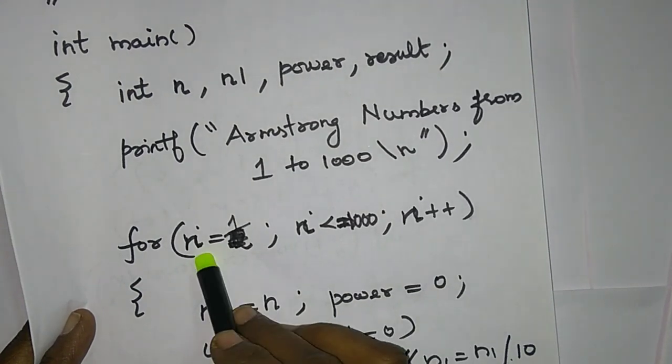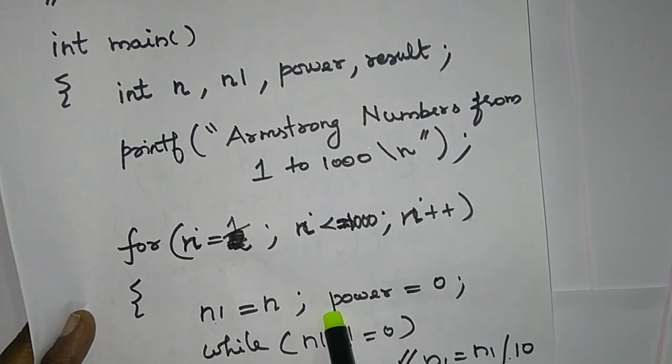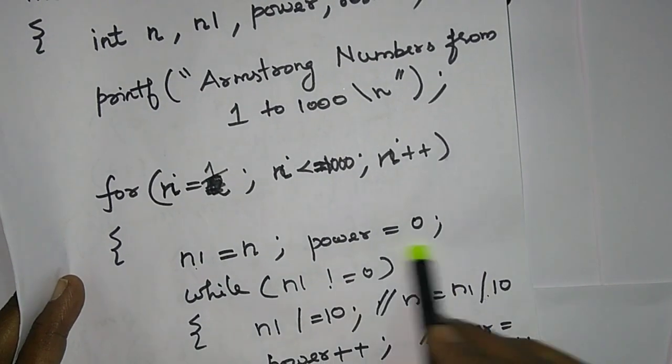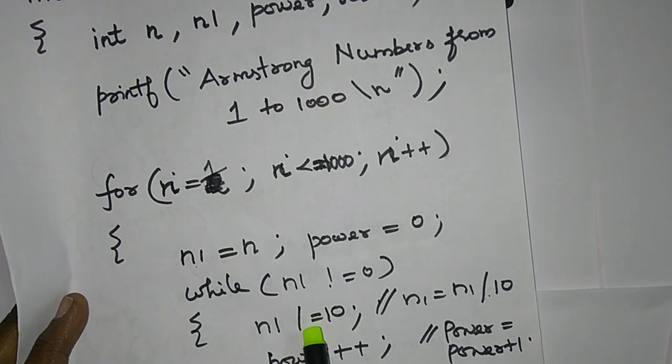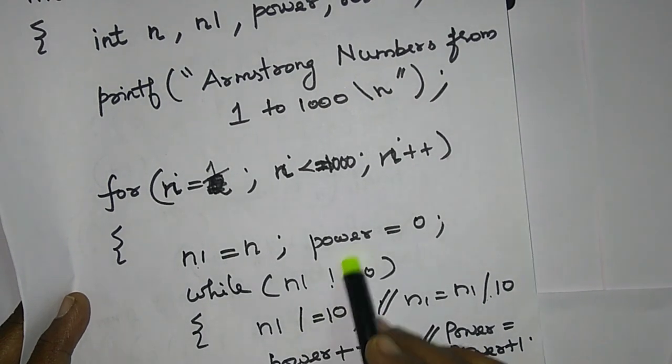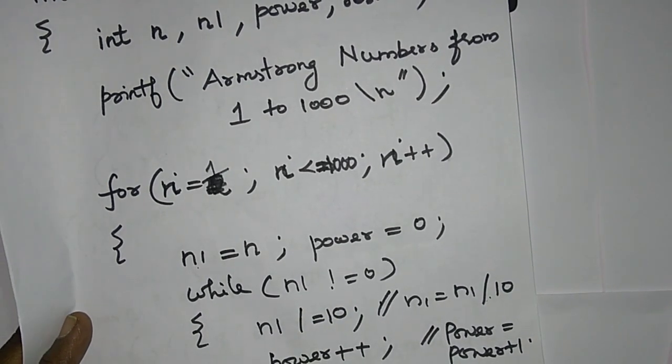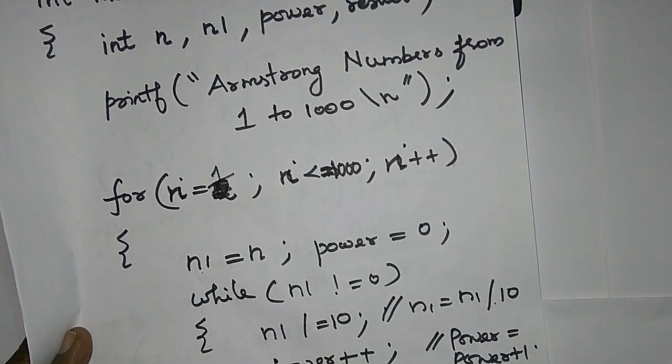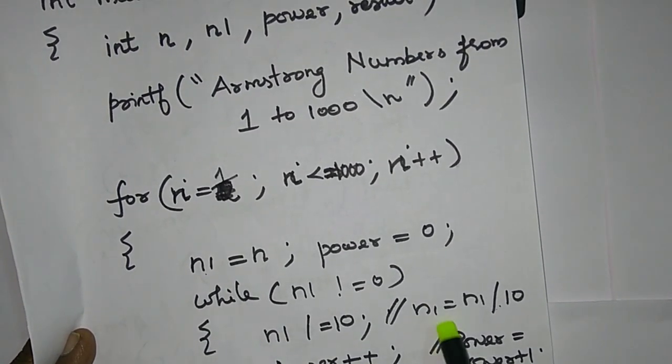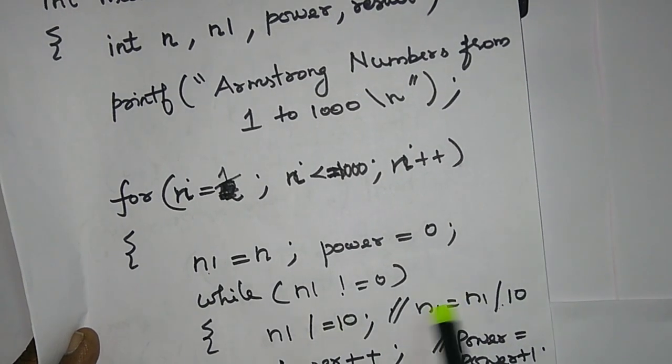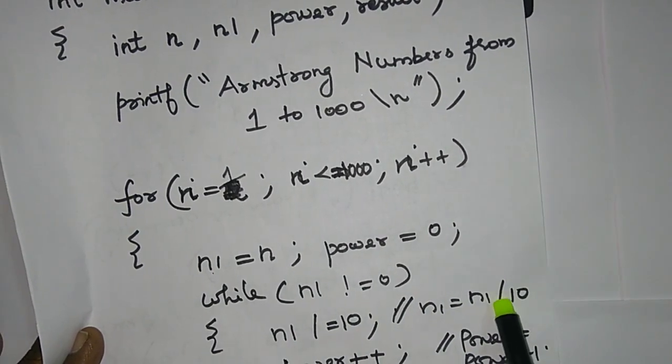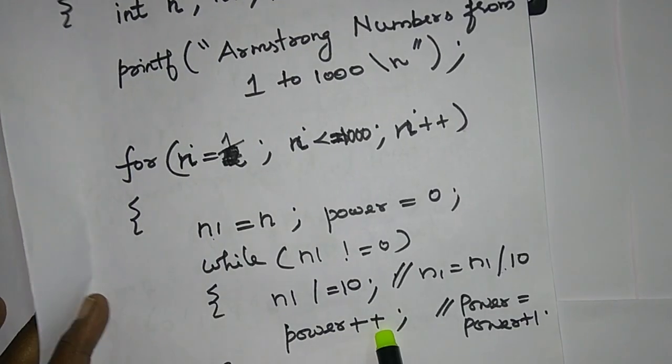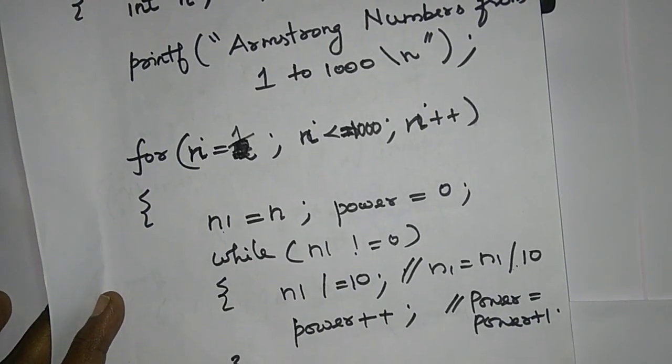And we will be for first time n equal to 1. We will make initialization. What is the coding for this code? It is the number of digits. We will also use the variable power. We will write power as well. This is the increment. This is shortcut form, power plus plus, power equal to power plus one. That is shortcut form.